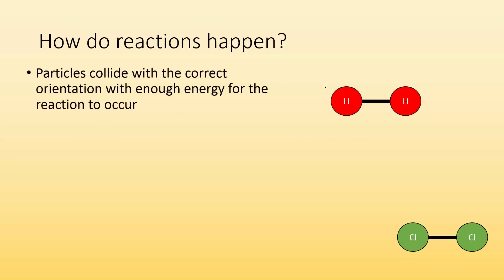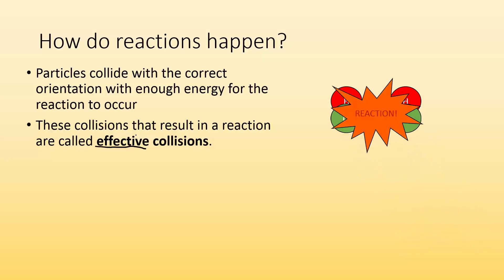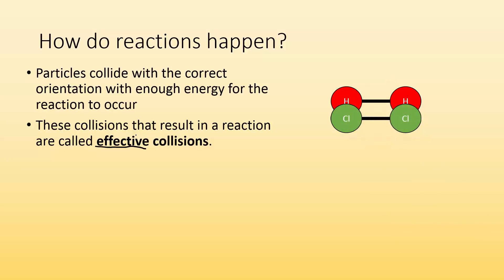Particles need to collide with the correct orientation and with enough energy for a reaction to occur. Collisions that result in a reaction we call effective collisions — why are they effective? Because they resulted in something happening. Just because molecules bump together doesn't mean you get a reaction, but all collisions that result in a reaction are effective collisions. Those old bonds get broken and new bonds get made — a reaction occurred.